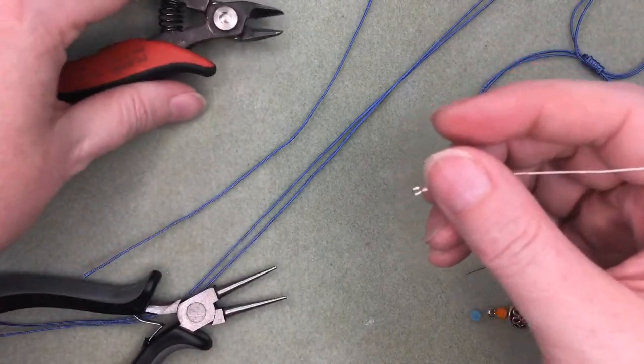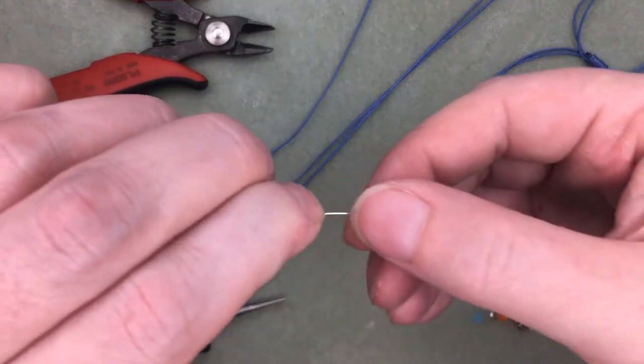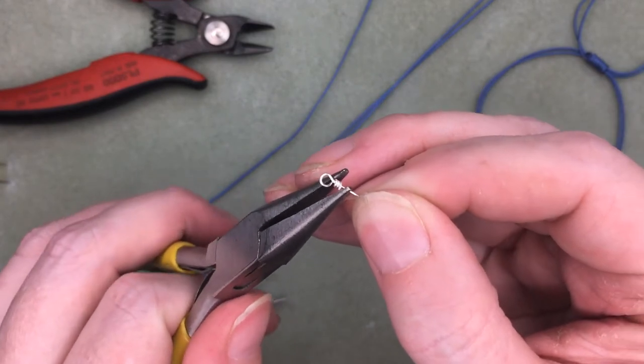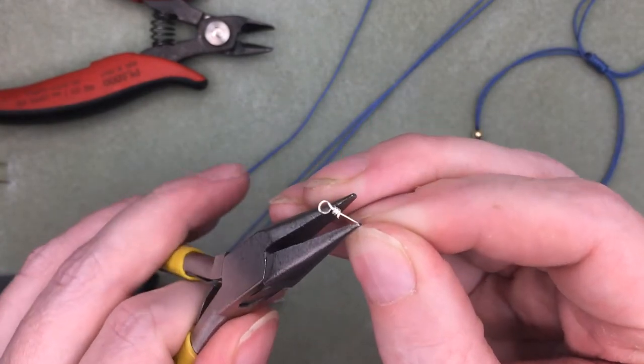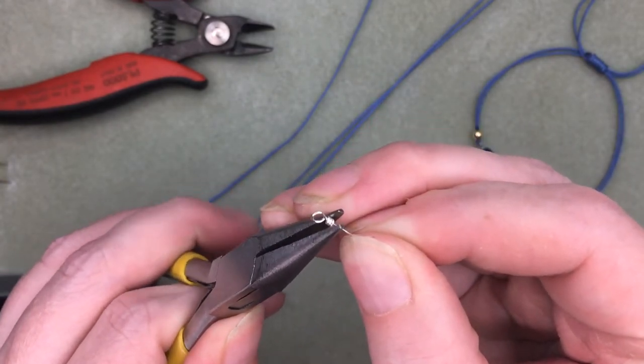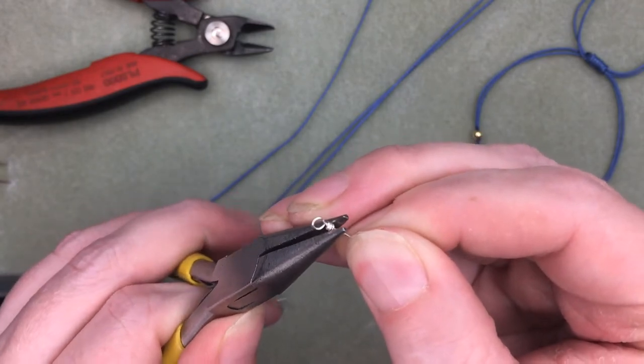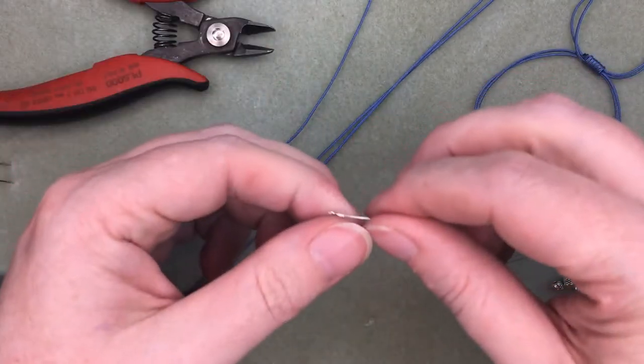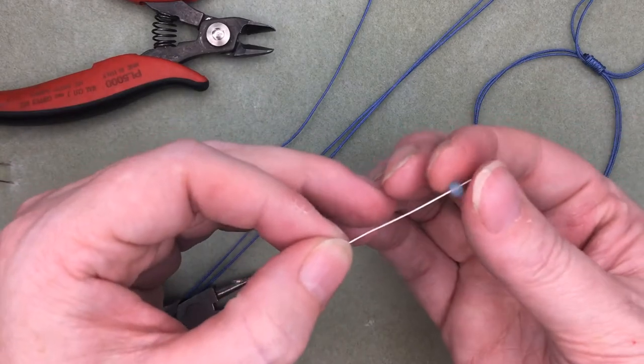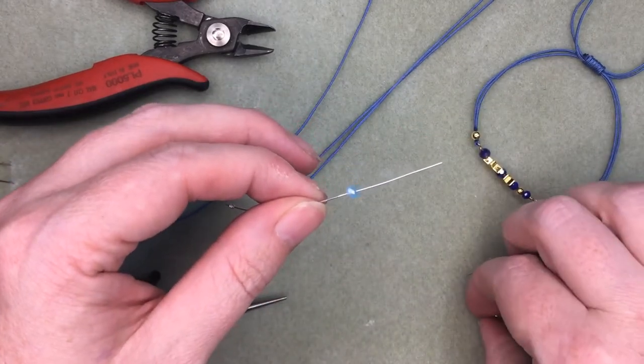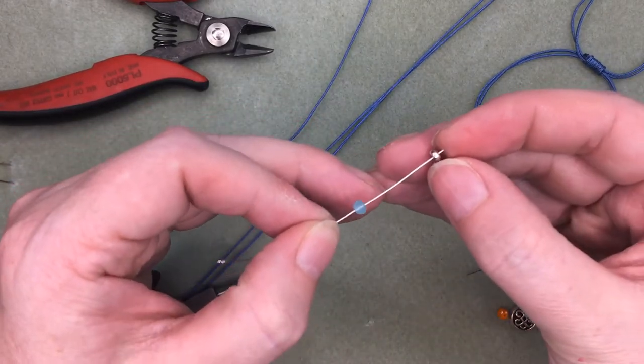So I'm gonna put my beads on the wire. But if you had larger beads, you wouldn't need to take this step, you could just thread them right onto the cording. So then I'm gonna thread all my beads here. So I've got some crystals and some metal beads just to create a little design.